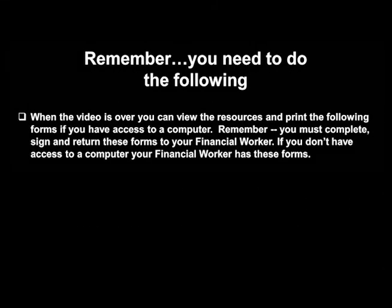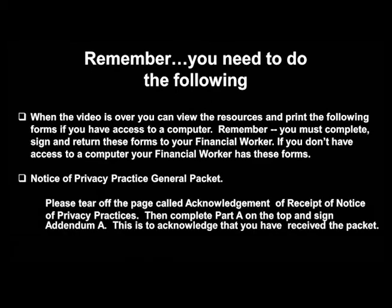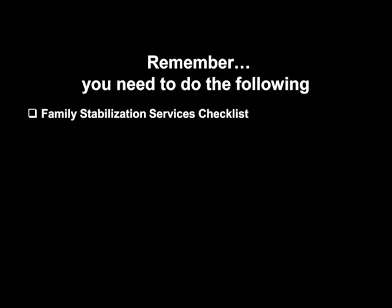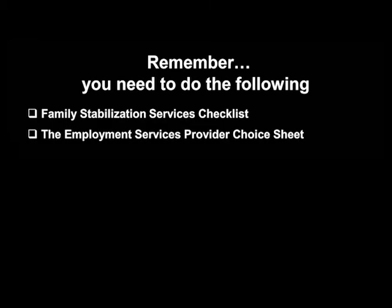When this video is over, you can view the resources and print the necessary forms for your appointment if you have access to a computer. If you do not have access to a computer, you can contact your financial worker for the forms. The following is a list of forms that need to be completed, signed, and returned to your financial worker. Please complete Part A at the top of the form and make sure you sign Addendum A at the bottom of the form. This is to acknowledge that you have received the packet. Please also complete the Family Stabilization Services Checklist and the Employment Services Provider Choice Sheet.